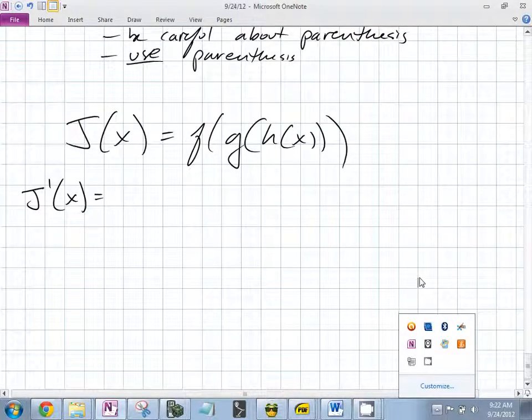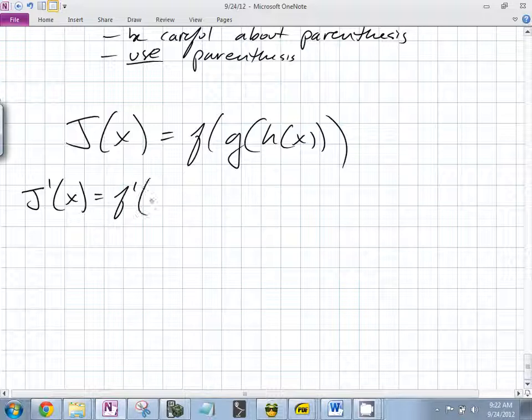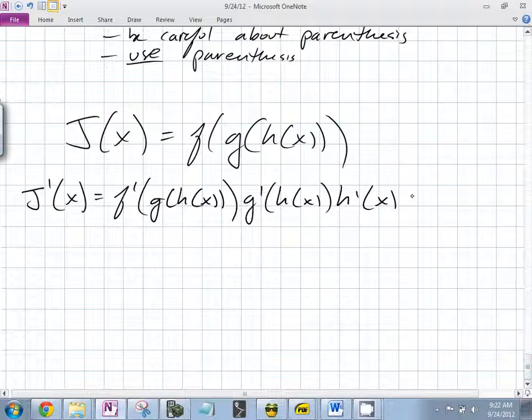What is j prime of x? It's f prime of the inside times g prime of h times h prime of x. You can absolutely start this way and then fill in the blanks. This is exactly what we just did, but we had function values for f, g, and h. Same exact thing. Whatever you want to do is totally fine with me.